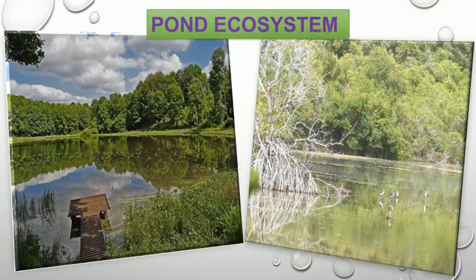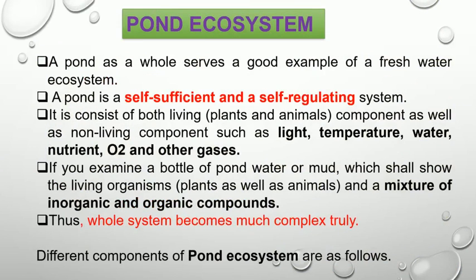Then the pond ecosystem. A pond as a whole serves as a good example of a freshwater ecosystem. A pond is a self-sufficient and self-regulating system consisting of both living as well as non-living components. If you examine a bottle of pond water or mud, we shall find living organisms — plants as well as animals — and a mixture of inorganic and organic compounds, which makes the whole system much complex.